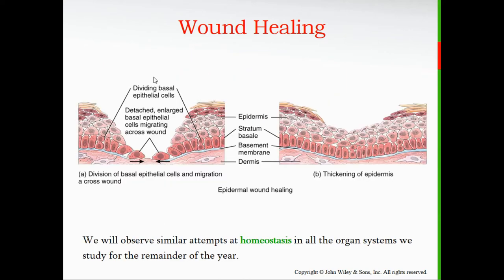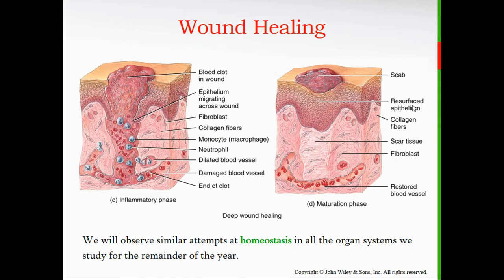Here's a diagram showing how an epidermal wound heals. A cut or abrasion separates cells of the epidermis but doesn't penetrate the dermis. Wound healing starts at the base and works its way up — the basal cells rapidly divide to close the gap, pushing their way outward. Eventually the gap is completely healed.